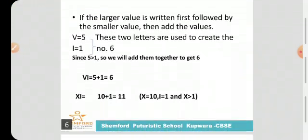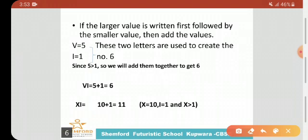Now let's move to the third rule: If the larger value is written first followed by the smaller value, then add the values. V equals 5, I equals 1. These two letters are used to create the number 6. Since 5 is greater than 1, so we will add them together to get 6. VI equals 5 plus 1, equals 6. Whenever we have larger value written first followed by the smaller value, we have to add the values. Similarly, XI: X represents 10, I represents 1, then 10 plus 1 equals 11.